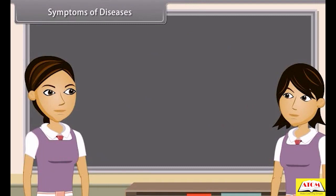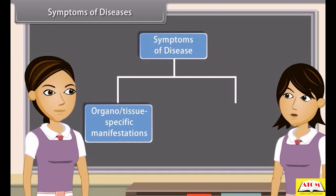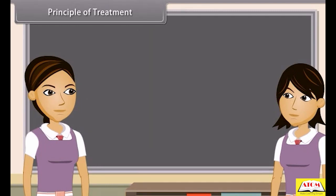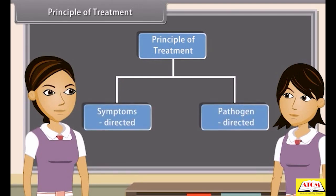Disease symptoms are of two types: organ or tissue specific manifestations, and common manifestations. The principles of treatment of various diseases are symptom-directed and pathogen-directed.